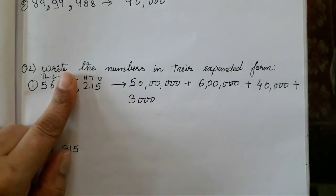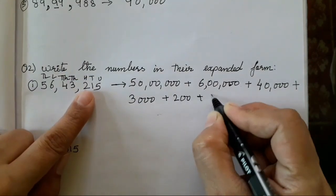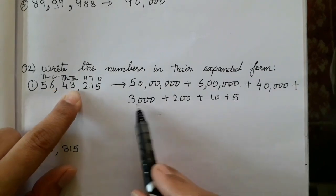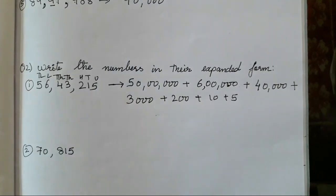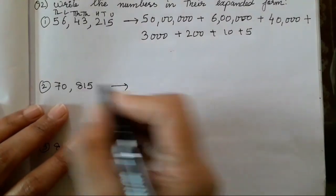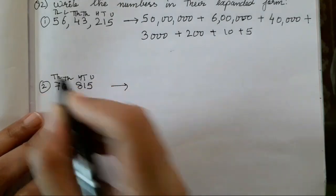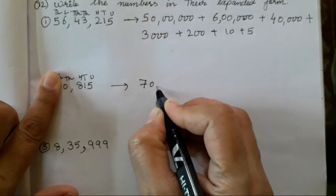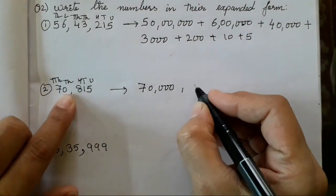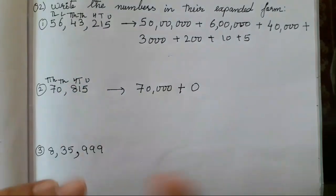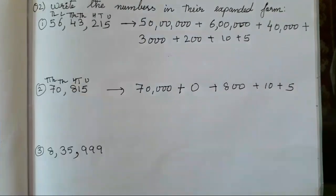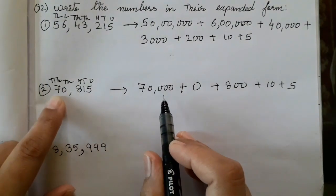Then three thousand — put the plus sign, don't forget the plus sign. Take number three, put a finger, then add the zeros. The zeros reduce as you go down. Plus two hundred, plus ten, plus five. So: fifty lakh plus six lakh plus forty thousand plus three thousand plus two hundred plus ten plus five — this is known as the expanded form. This is the method I have shown from the very beginning.